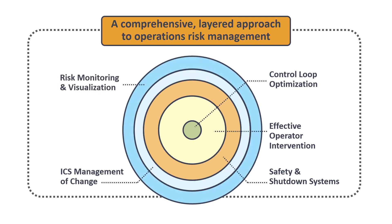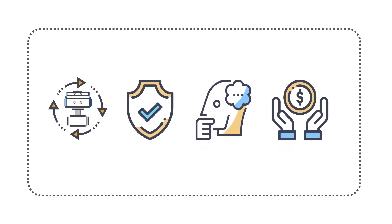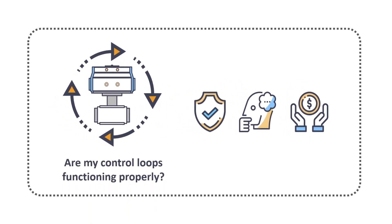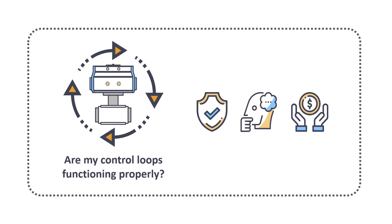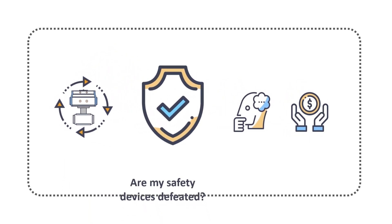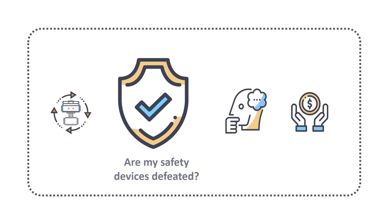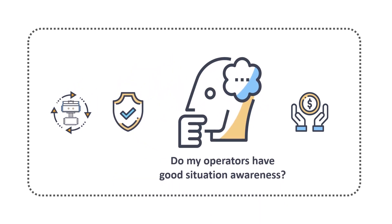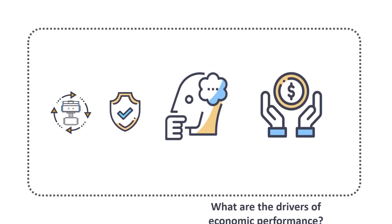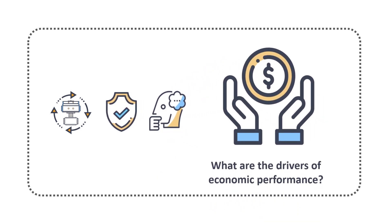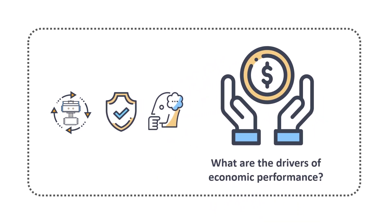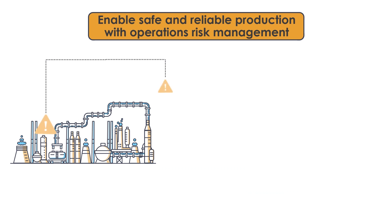A comprehensive approach to operations risk management helps answer questions such as: Are my control loops functioning properly? Are there defeated safety systems? Do operators have good situational awareness? What performance issues are affecting profitability?